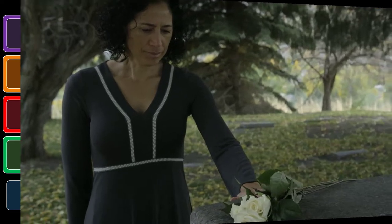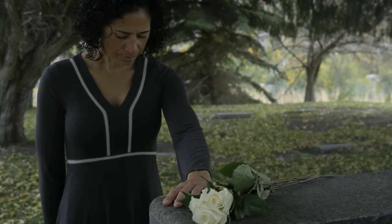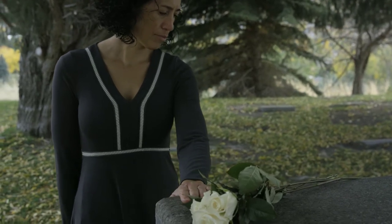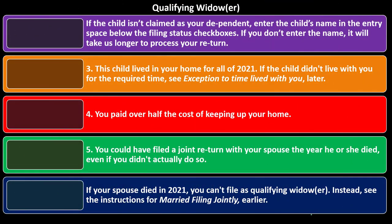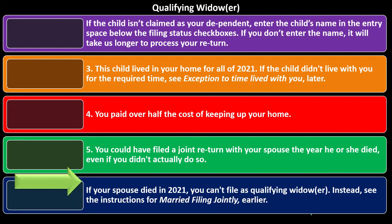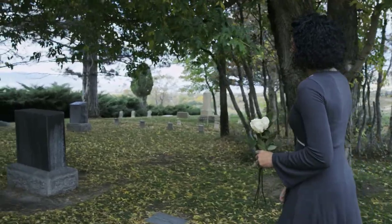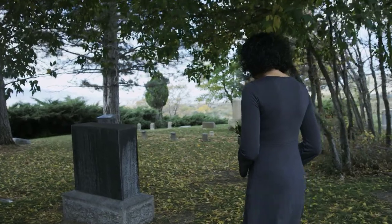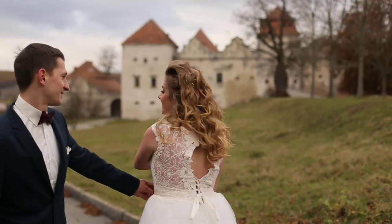In other words, in the year that they died, you could have filed married filing jointly — which is usually what you would normally file unless you filed married filing separately. If your spouse died in 2021, you cannot file as qualified widow/widower; instead, see the instructions for married filing jointly. If they died in this tax year 2021, you're most likely still going to be considered married for taxes.